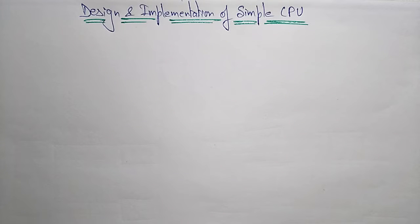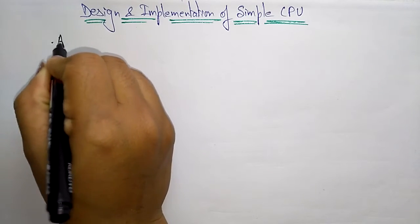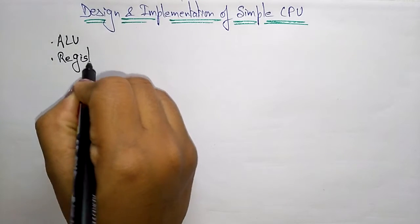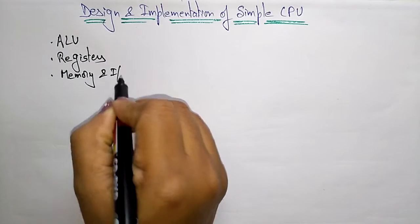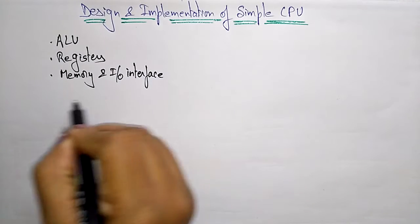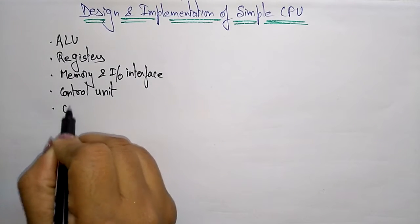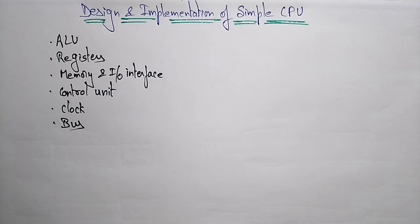Welcome students. Coming to the next topic: design and implementation of a simple central processing unit. The CPU has components like the ALU (arithmetic logic unit), registers used to store data temporarily, memory, IO interfaces, control unit, clock, and buses. These are all the different components present in the CPU.